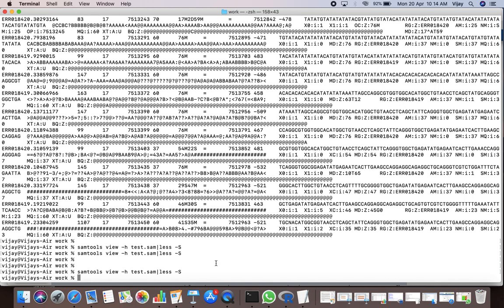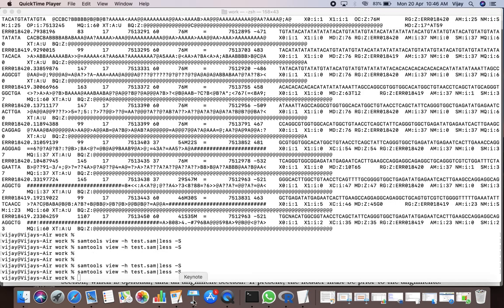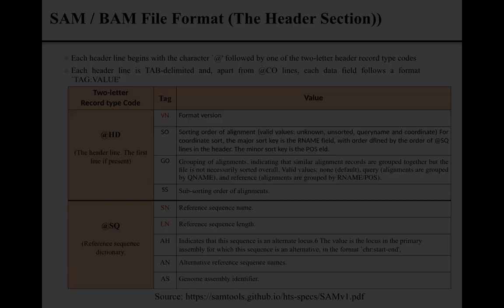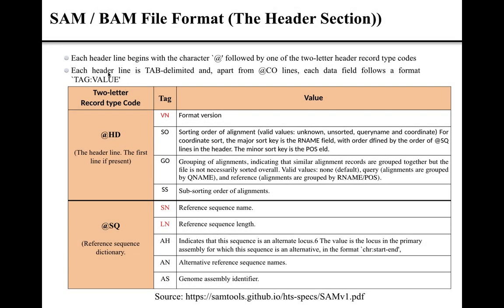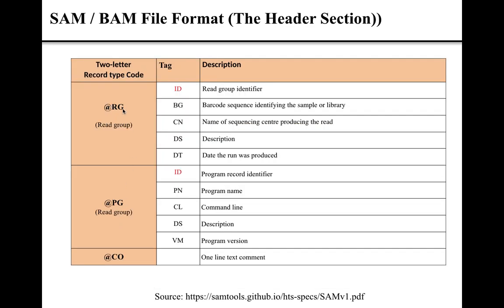Now I would like to discuss how information is organized into the header section of the SAM file format. As we already have discussed, each header line in a SAM file format begins with the @ character. This @ character is followed by one of the two-letter header record type codes, which could be @HD, @SQ, @RG, @PG, or @CO.